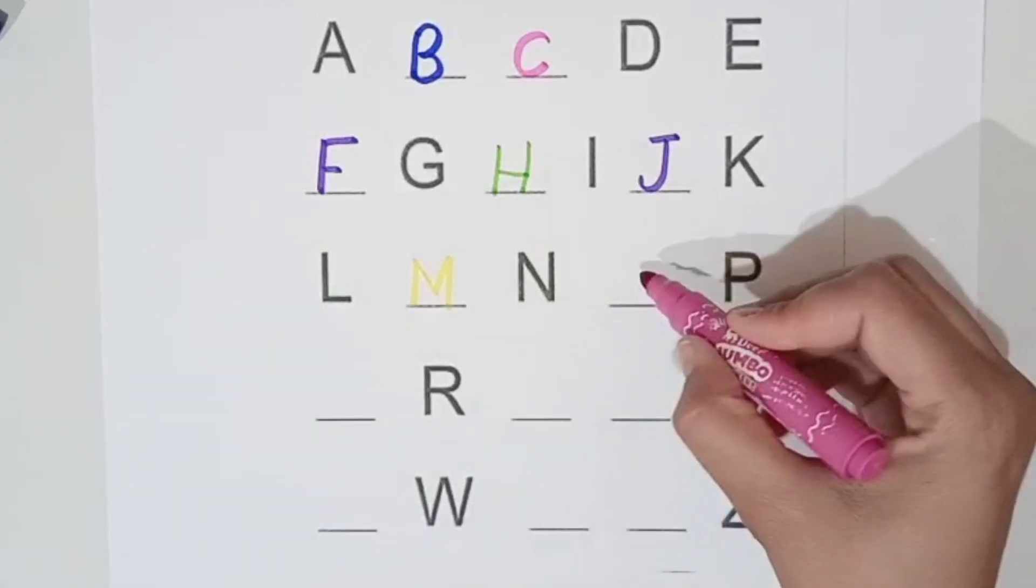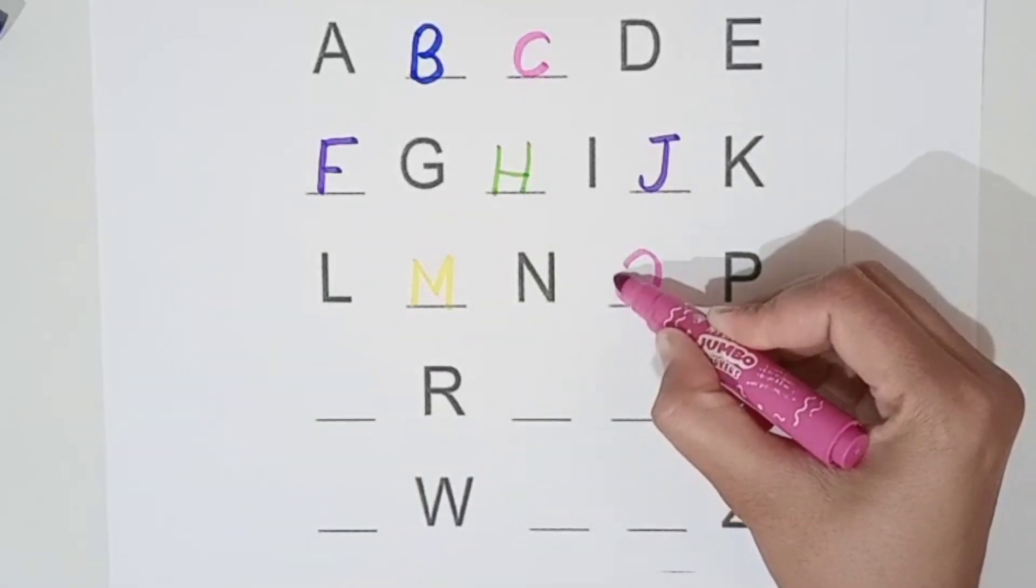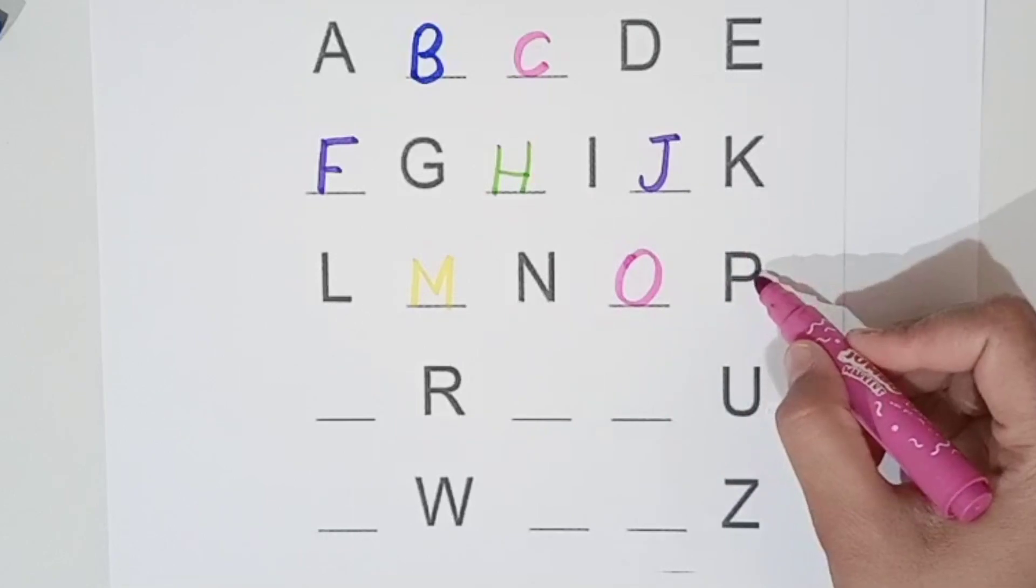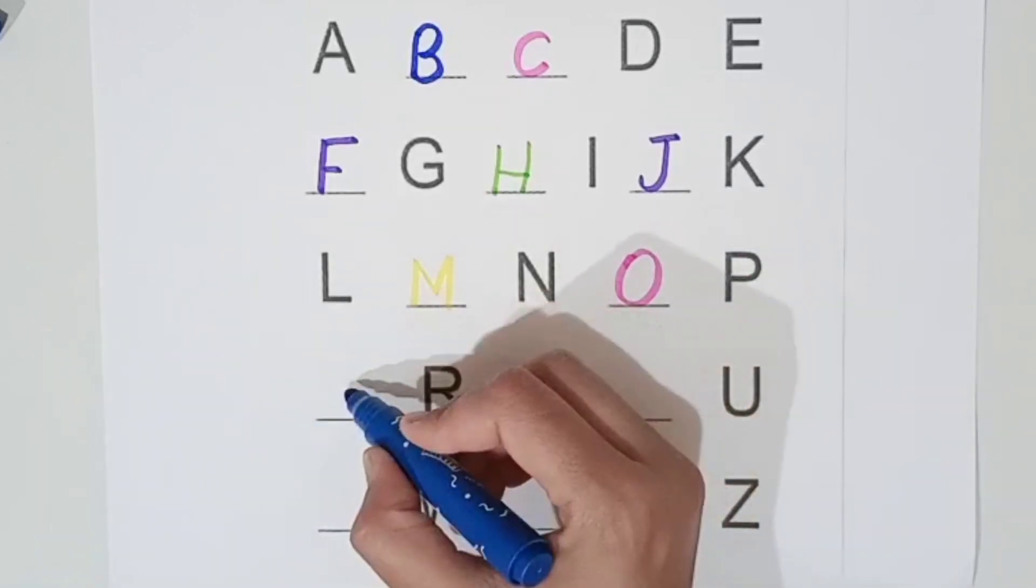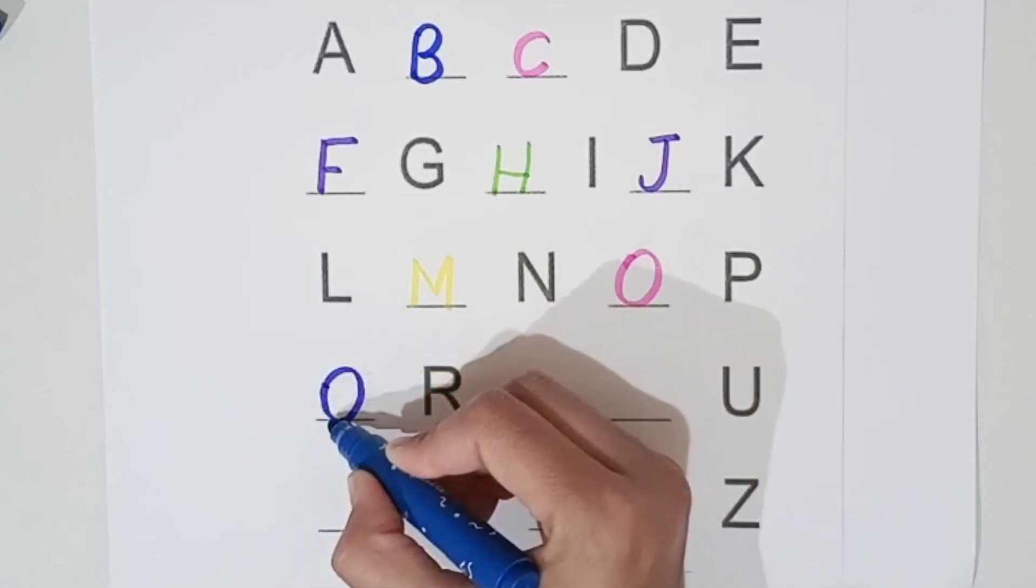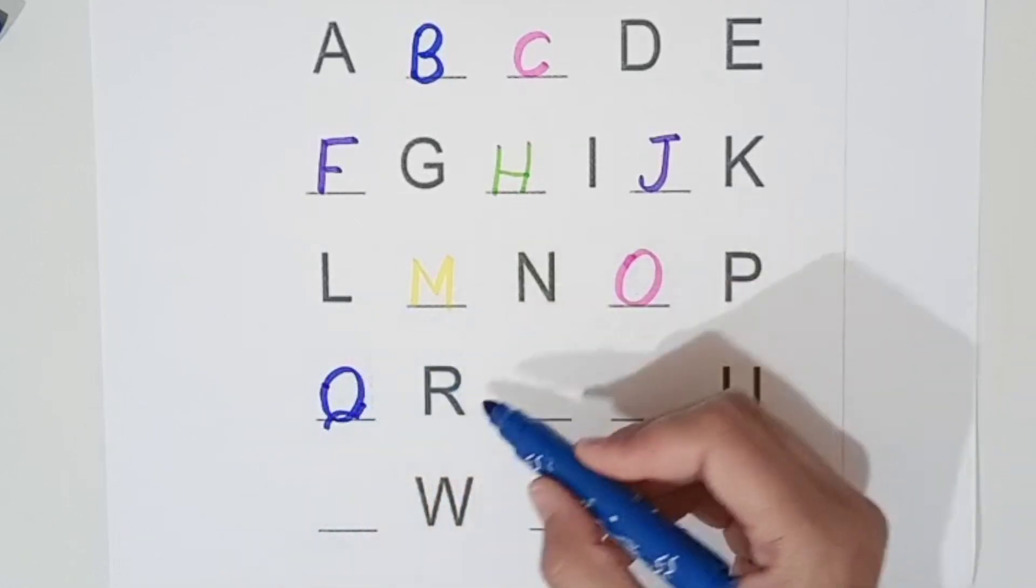Pink color. O, O for orange. P, P for parrot. Blue color. Q, Q for queen. R, R for rabbit.